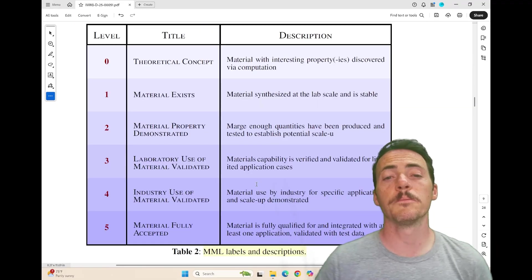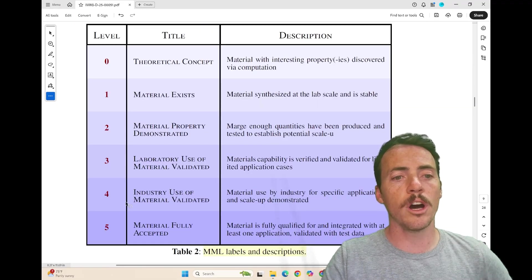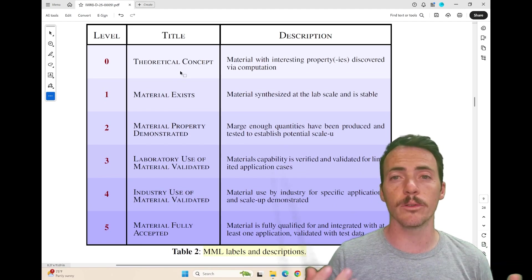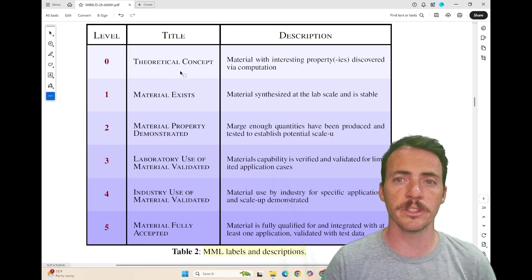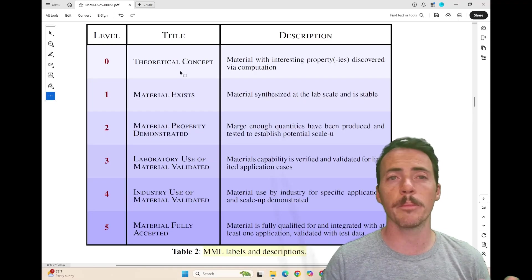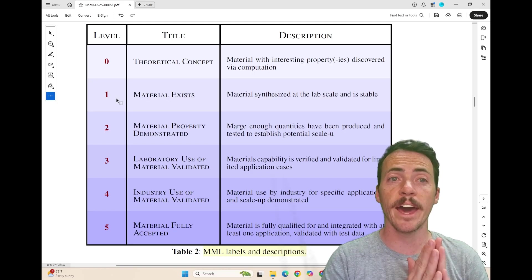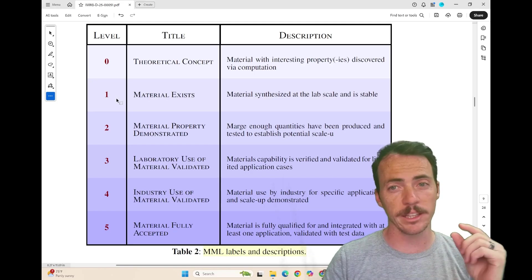So let's take a look at these. The materials maturity levels go from zero up to five. Zero is a theoretical concept, meaning maybe DFT or some first principle calculation showed that a material could exist or interesting properties could be found. Then materials MML level one would be, let's show that the material actually exists experimentally, but probably at a lab scale.